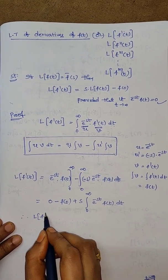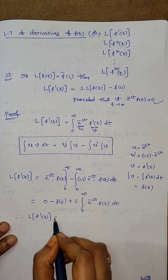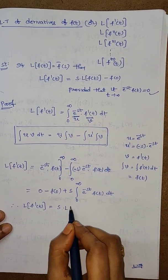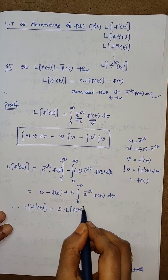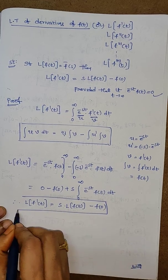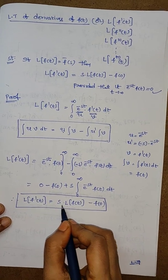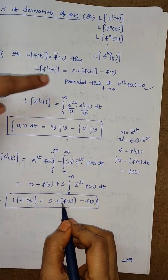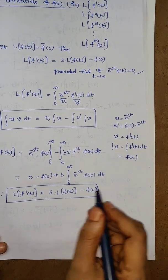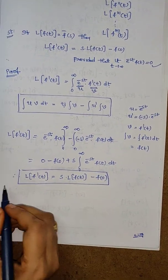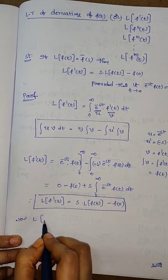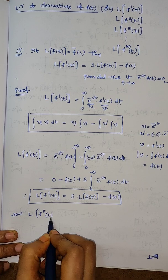Therefore, the Laplace transform of f dash of t equals s into the integral, which is the Laplace transform of f of t, minus f of 0. So the Laplace transform of the first order derivative is established. Now we proceed to the Laplace transform of f double dash of t.